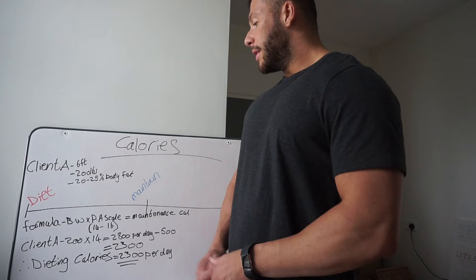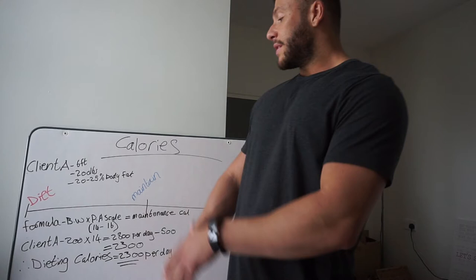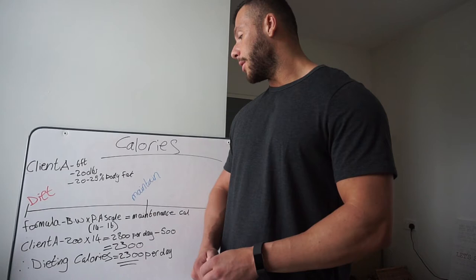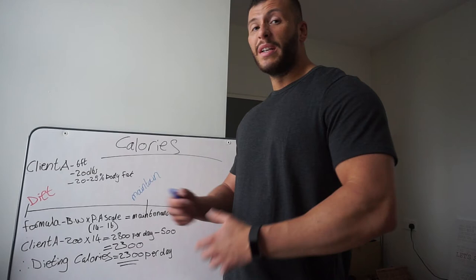We're going to take our body weight, multiply it by our physical activity scale. That's going to give us our maintenance calories. Physical activity scale is between 14 and 16. That depends on what they're doing throughout the day, whether they sit at a desk job or whether they're out laboring all day. So Client A, we're going to multiply 200 pounds by 14. We're just going to assume Client A isn't that physically active at the moment. He has a desk job, he's kind of new to training.